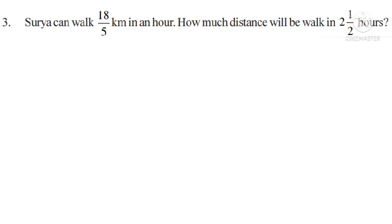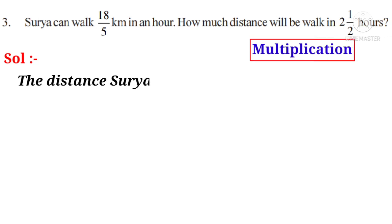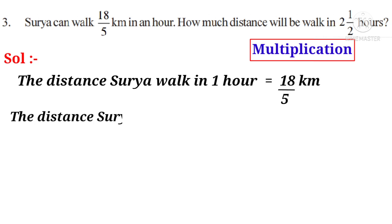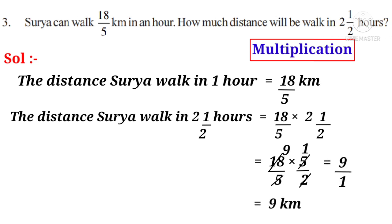Problem 3: Surya can walk 18/5 kilometers in an hour. How much distance will he walk in 2 and a half hours? The hours are increased, so the operation is multiplication. Distance in 1 hour = 18/5 km. Distance in 2½ hours = 18/5 × 2½. Convert 2½ to improper fraction: 2 × 2 + 1 = 5/2. On simplification by 5 and by 2, numerator: 9 × 1; denominator: 1. That is 9 kilometers.